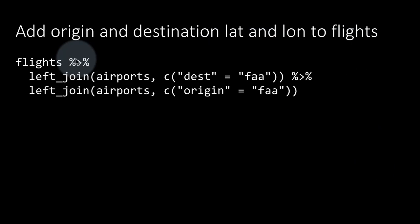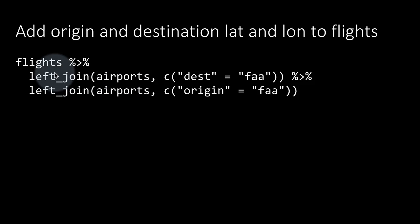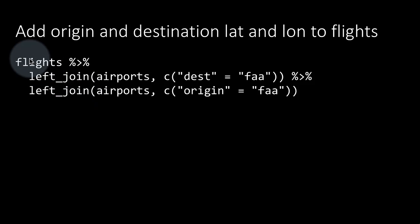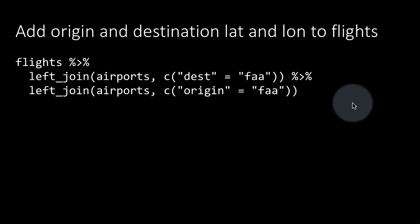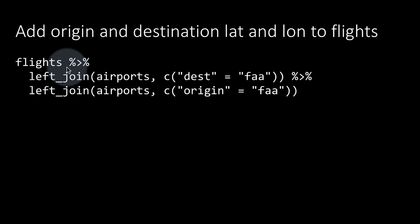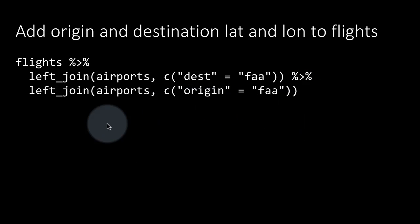If we want to add the origin and destination latitude and longitude to flights, we will have to join flights to airports twice. This could have been an inner join because we are only interested in proper matches — we know that every airport in the flights table also occurs in the airports table. If there is no match we are not going to get the latitude and longitude, so there is no point in a left join. Once you have this, you get the latitude and longitude of both the origin and the destination.